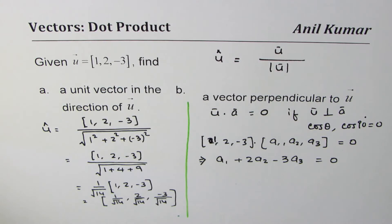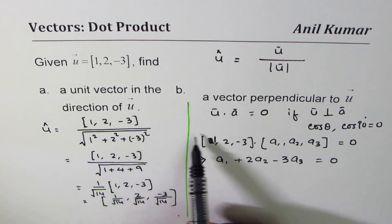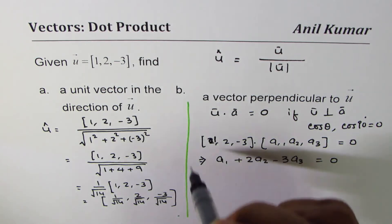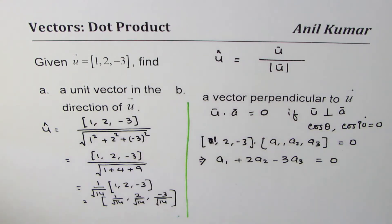In R3, we could have many perpendicular vectors. The reason is if you consider a line in the plane, there are infinitely many lines that could be perpendicular to it in R3. So there are an infinite number of vectors perpendicular to a given vector — that's the whole concept.